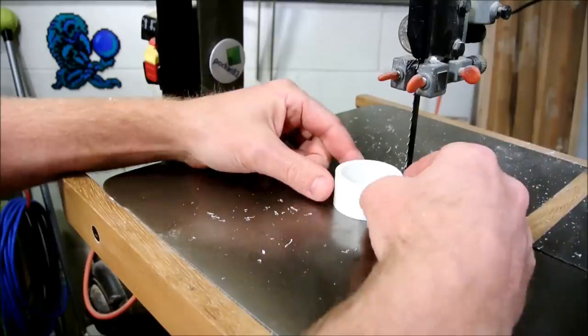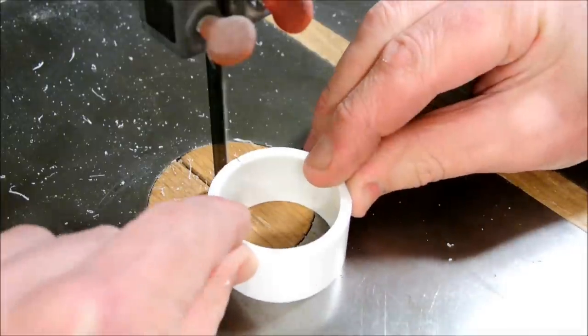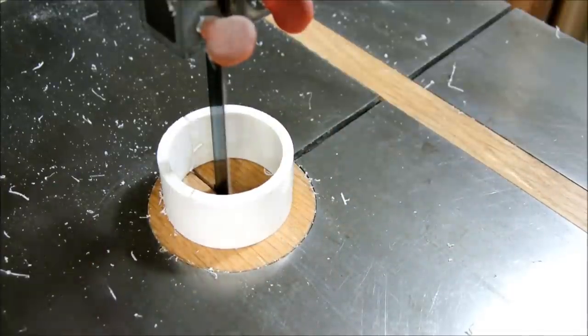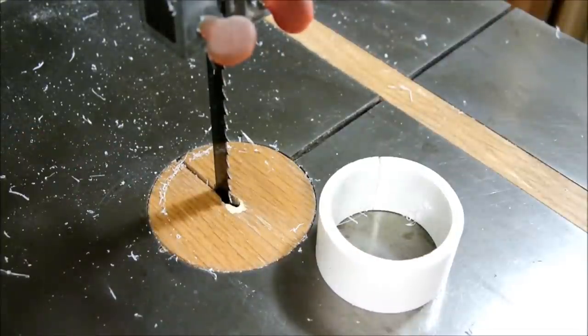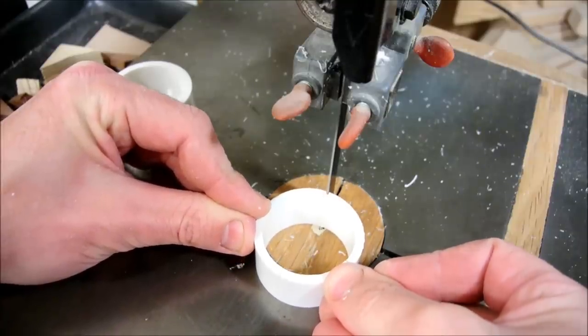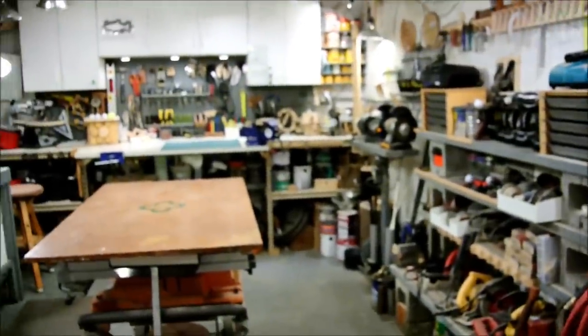So one way to do it is to stop the bandsaw after you pass through and pull it back out. But certainly another way that you can do it is to just go use the hacksaw.